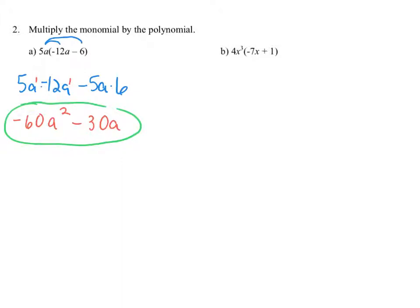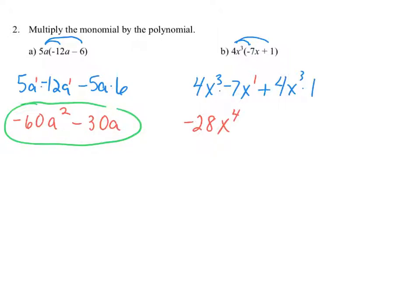For part B, we multiply the monomial 4x to the third by the binomial negative 7x plus 1 using the distributive property: 4x to the third times negative 7x, and 4x to the third times 1. 4 times negative 7 is negative 28, and x to the third times x to the first gives x to the fourth. 4x to the third times 1 is simply 4x to the third. Our answer is negative 28x to the fourth plus 4x to the third.